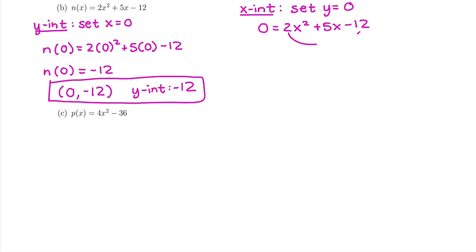So to factor by grouping, I'm going to take the first and last number and multiply them together. So 2 times negative 12 is negative 24. So I want to think of factors of negative 24 that add up to be 5. So I need a positive and a negative number that would add up to be 5, but multiply to be a negative 24. So if I do 24 times negative 1, that would be negative 24, but those add up, 24 minus 1 would be 23.